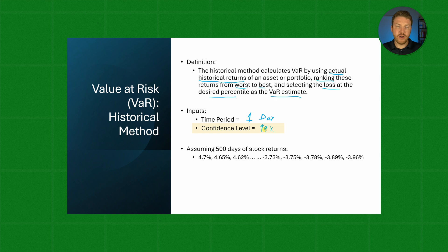We gathered actual historical returns from the last 500 trading days and sorted them. The best one was 4.7%, the worst one was negative 3.96%, and we have hundreds in between these two.